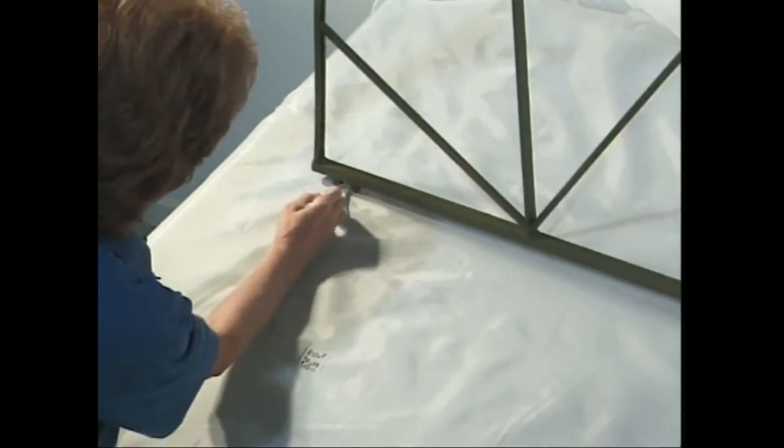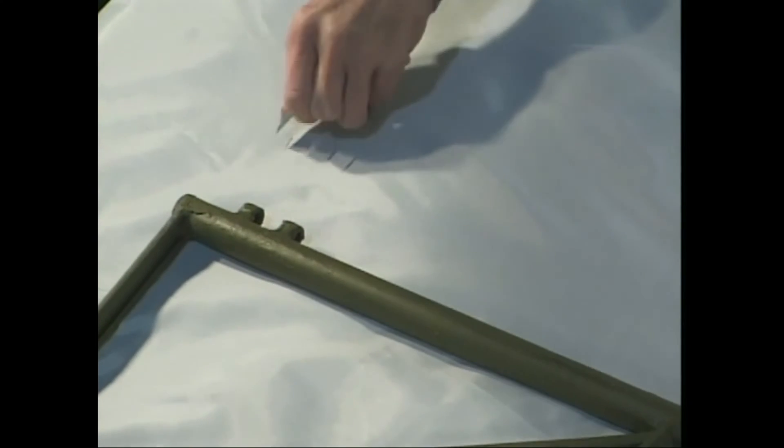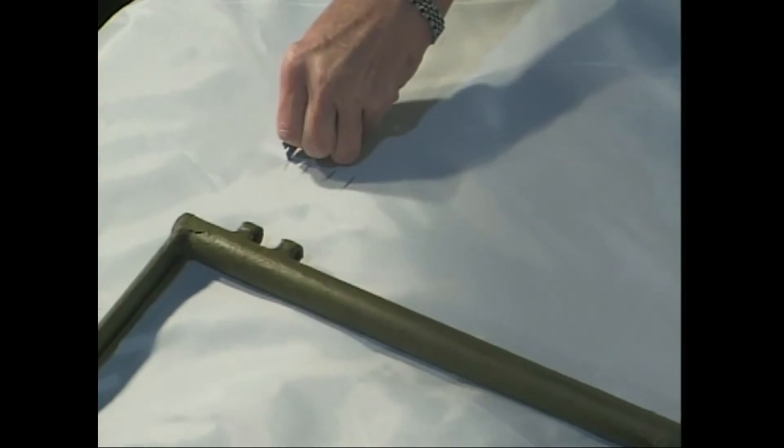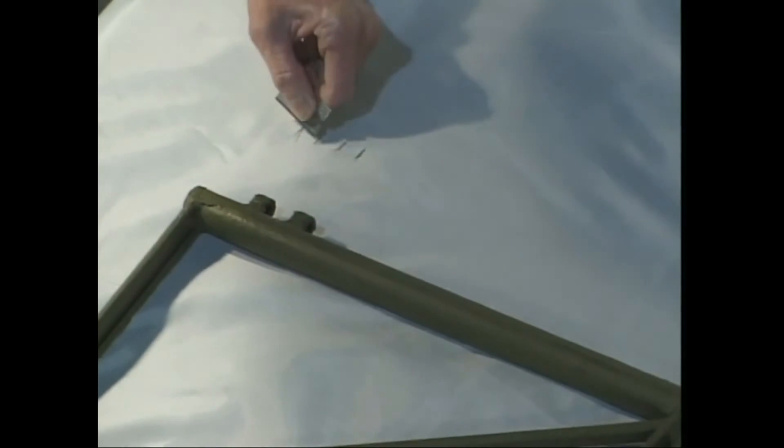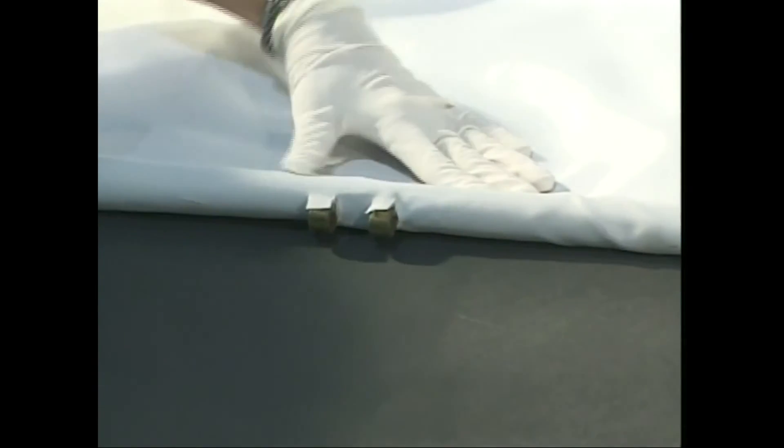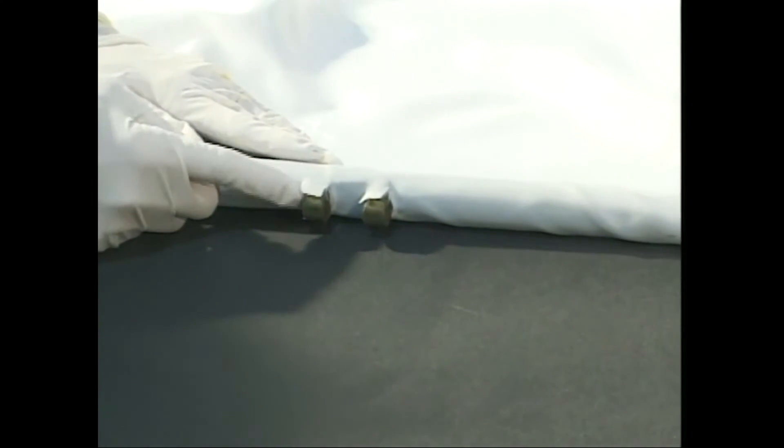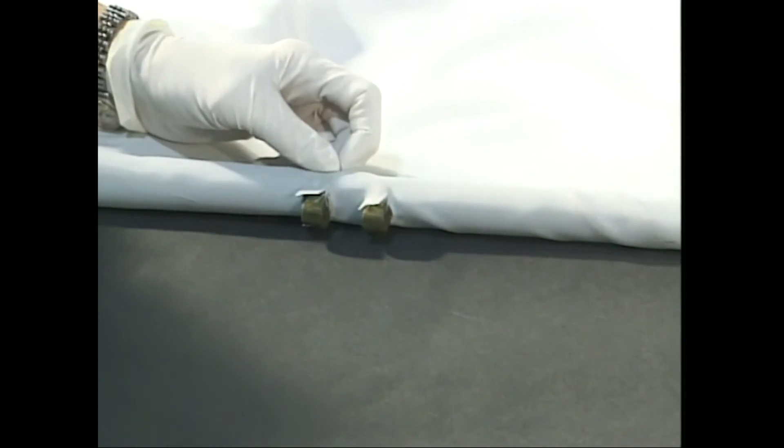With a number two pencil, mark on the fabric where the hinge points are. Using a sharp razor blade, carefully make small cuts at the marked locations to allow the hinges to poke through. Do not cut off the little flaps yet. After shrinking the fabric, you will know exactly how much to trim.